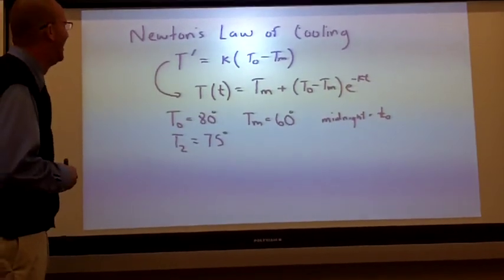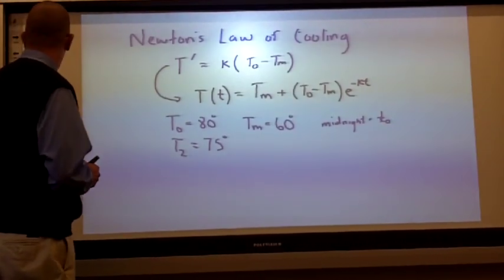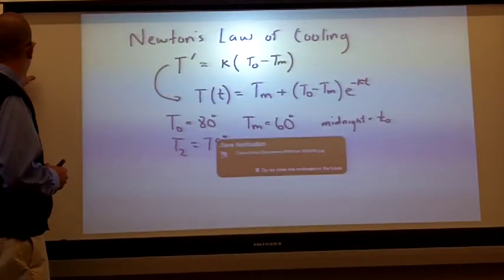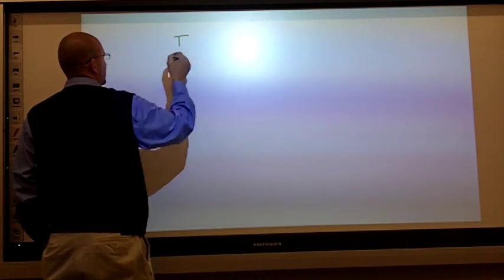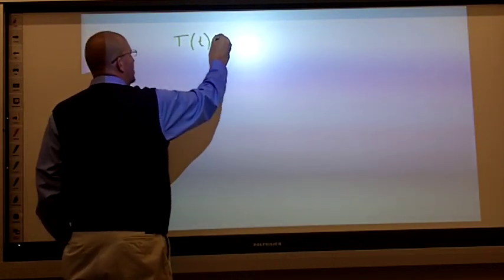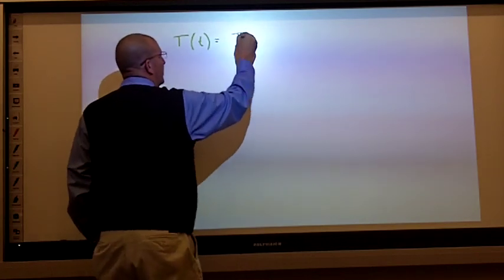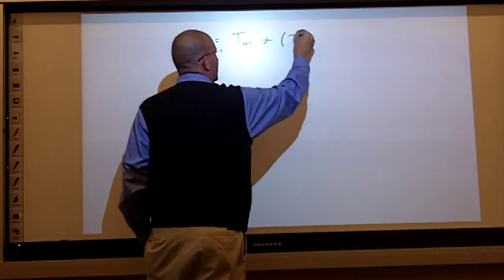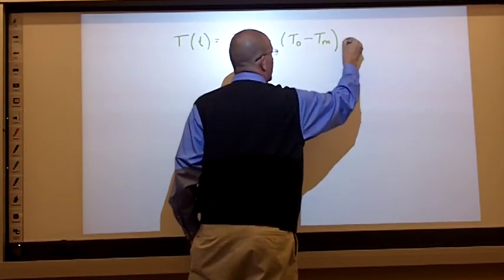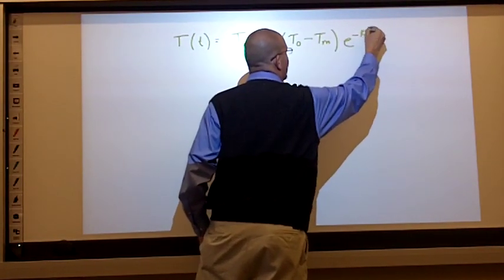Let's try. Let's see. I know that my general equation is the temperature of the medium plus the difference in the body temperature and the temperature of the medium times E to the negative KT.